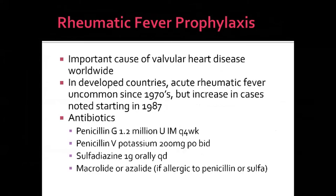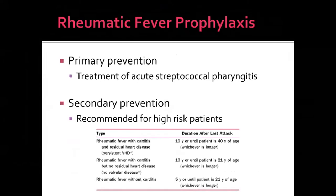Rheumatic fever prophylaxis is important, as rheumatic heart disease is one of the most important causes of valvular disease, particularly in underdeveloped countries. Antibiotic regimens are typically penicillin-based; macrolides or sulfadiazine are used if penicillin-allergic. Primary prevention involves treating acute strep infections. Secondary prevention in patients who had carditis with rheumatic fever requires long-term antibiotic therapy, typically until at least age 40.